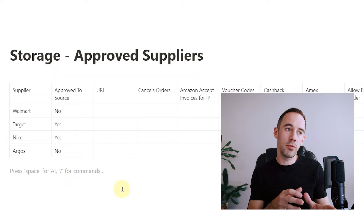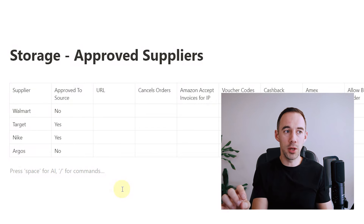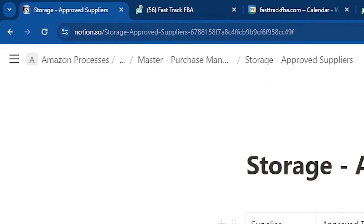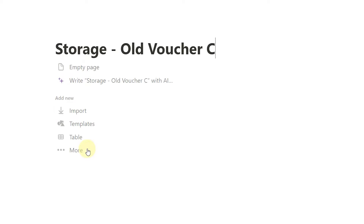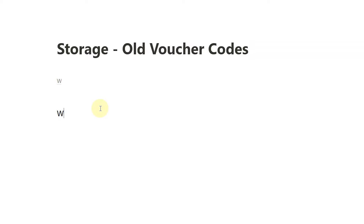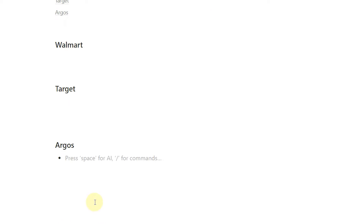The reason why I really like this is you're able to start building out information about suppliers that work for you, maybe build out voucher codes — you can put in links. For example, if I come back and do storage page, 'storage: old voucher codes,' and do empty page, add a table of contents, then headings for each supplier: heading three 'Walmart,' heading three 'Target,' heading three 'Argos.' Under Argos I might have one of the codes — like 'checkout13.' So I can just take that URL back to my master process.